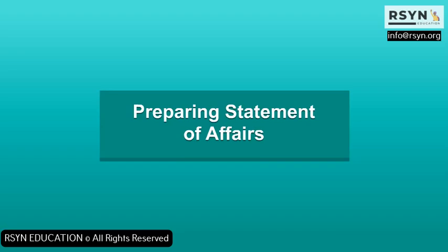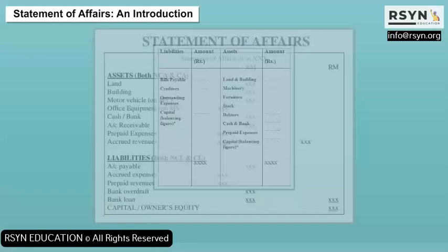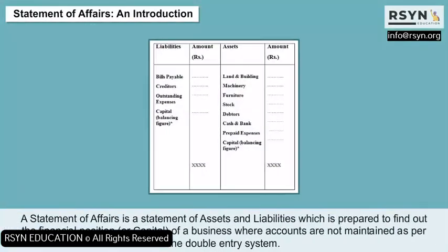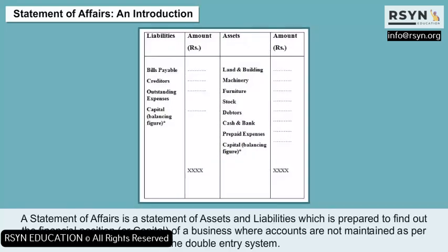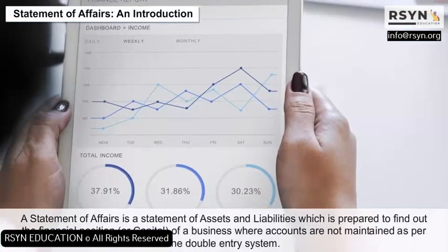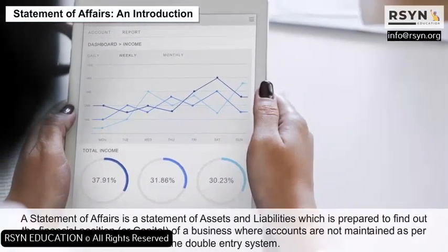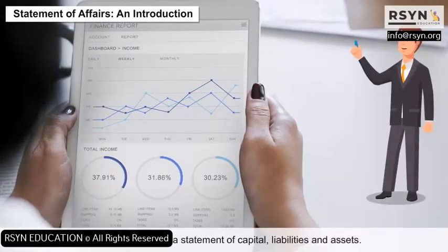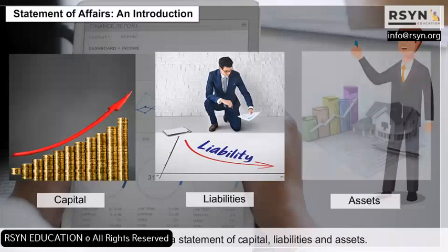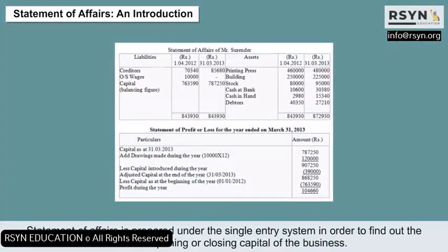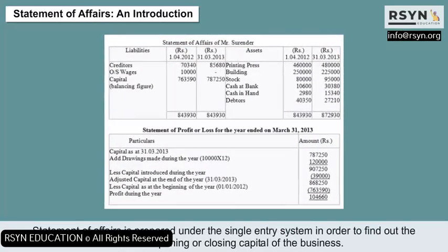Preparing Statement of Affairs: A statement of affairs is a statement of assets and liabilities which is prepared to find out the financial position or capital of a business where accounts are not maintained as per the double entry system. In other words, it is a statement of capital, liabilities, and assets. Statement of affairs is prepared under the single entry system in order to find out the amount of opening or closing capital of the business.